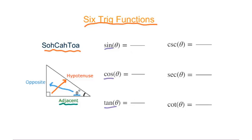For sine theta, that's the opposite over hypotenuse. For cosine theta, that's the adjacent over hypotenuse. For tangent, that's the opposite over adjacent.